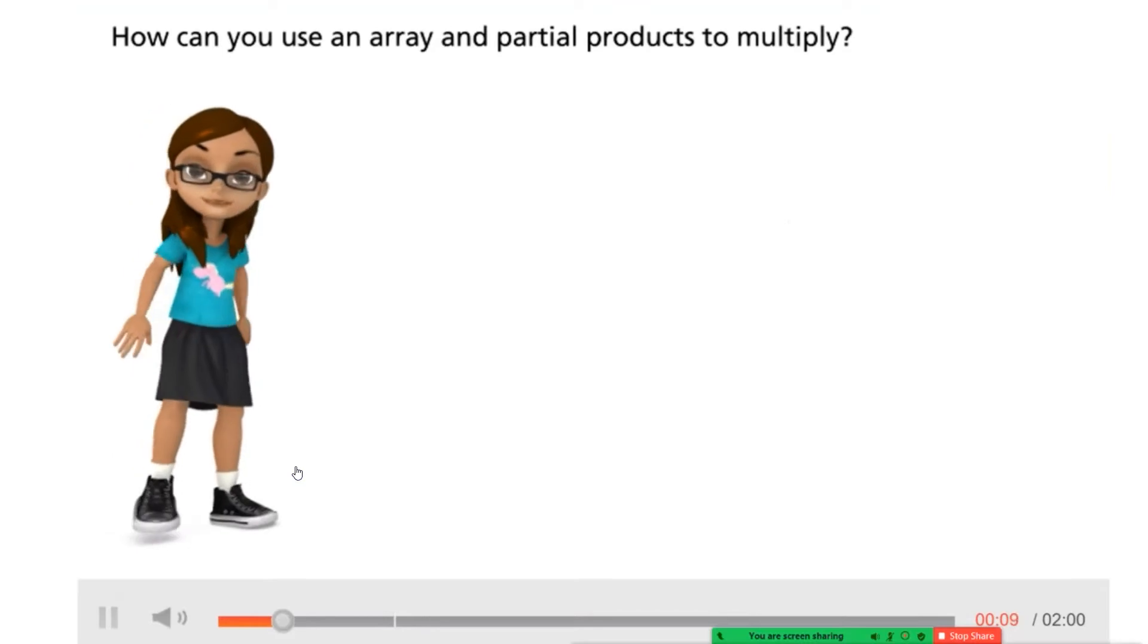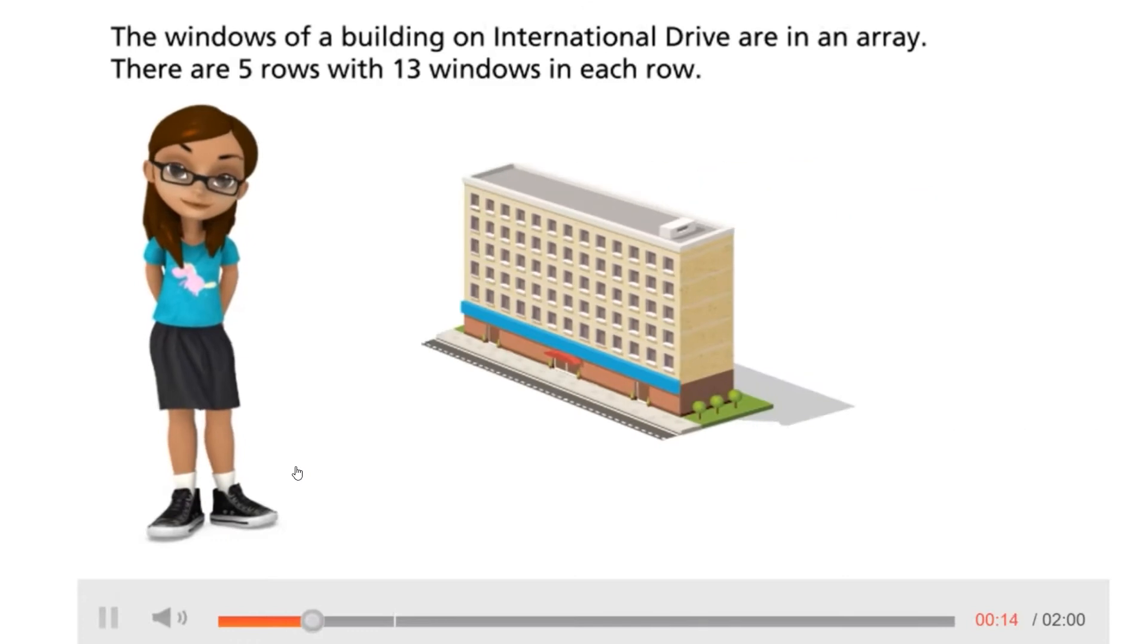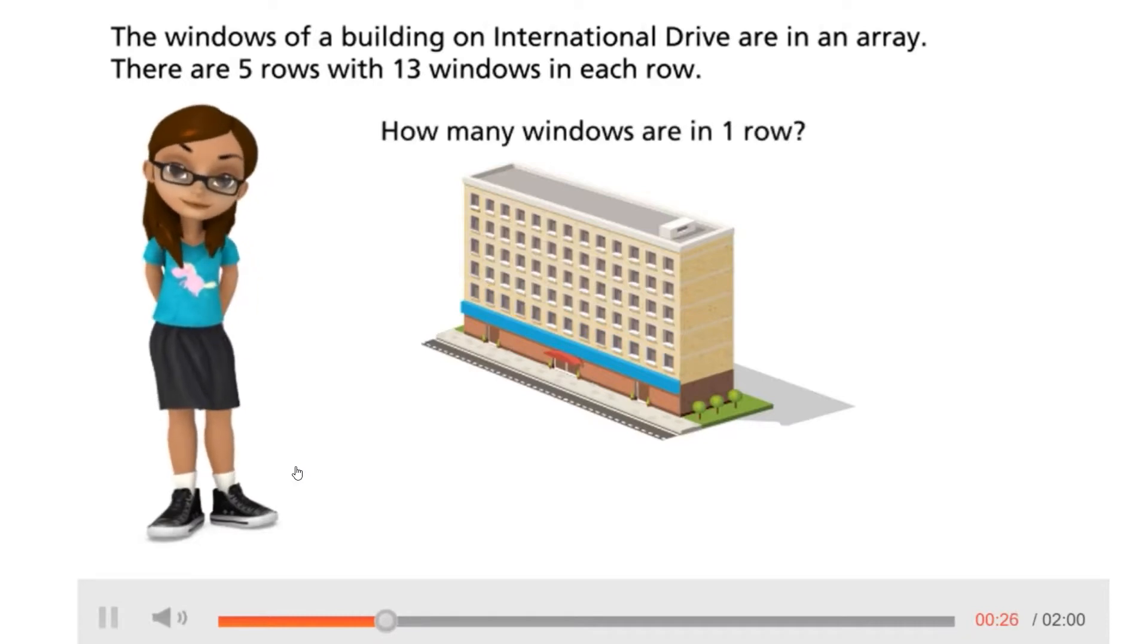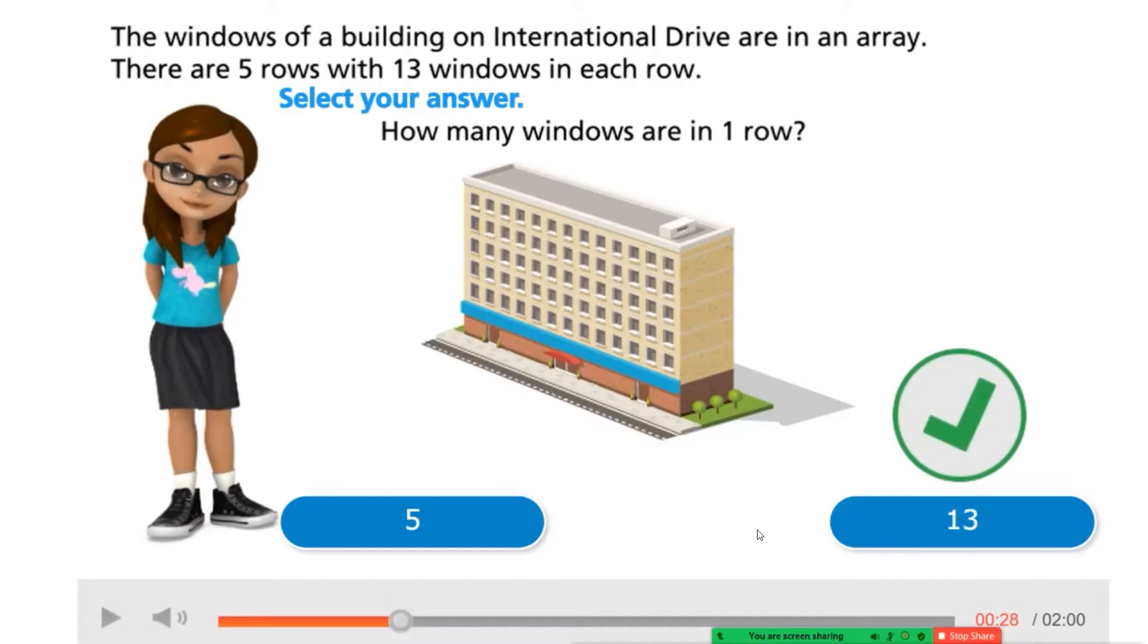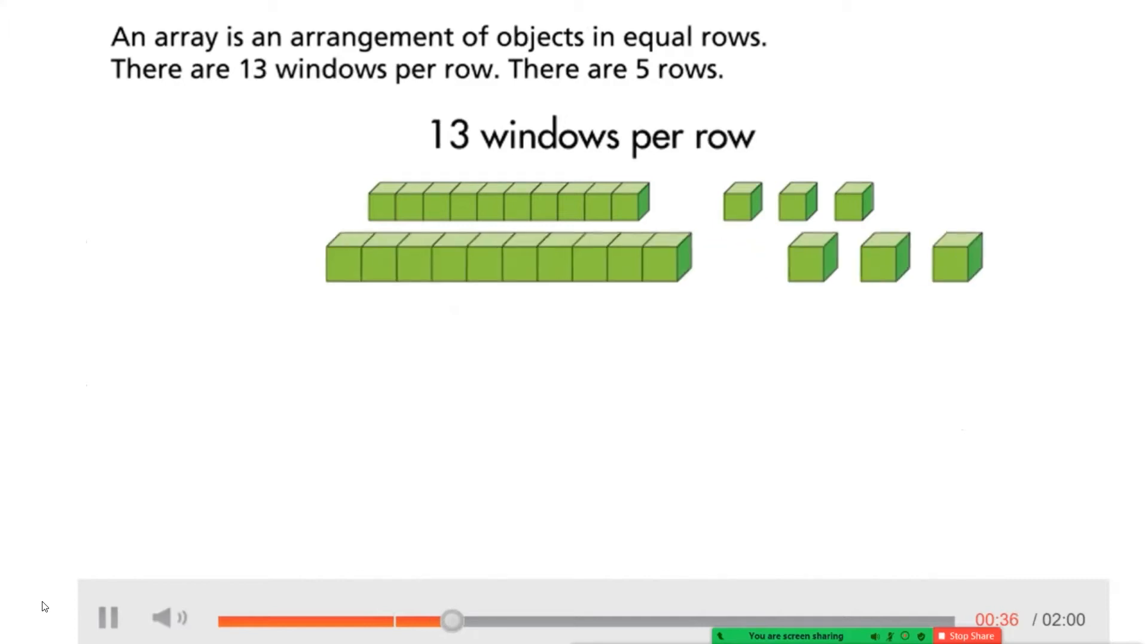How can you use an array and partial products to multiply? The windows of a building on International Drive are in an array. There are 5 rows with 13 windows in each row. How many windows are in this array? An array is an arrangement of objects in equal rows. There are 13 windows per row and 5 rows.